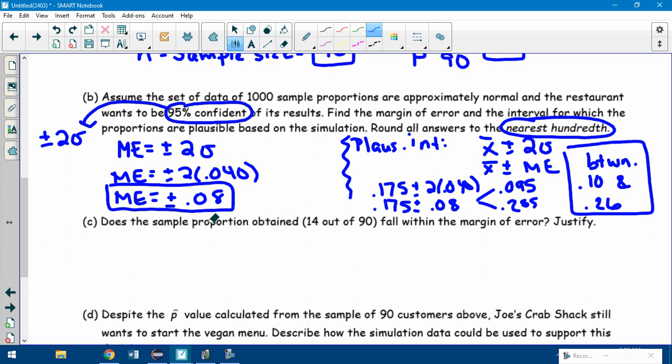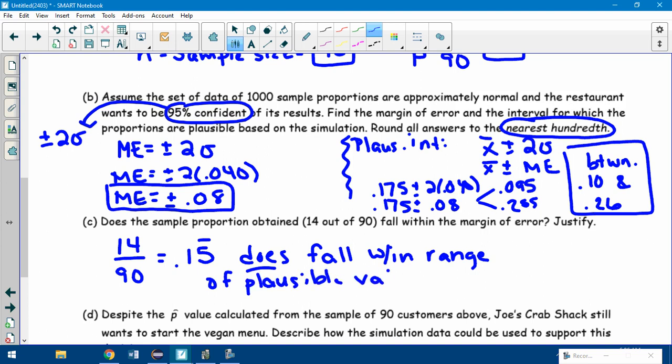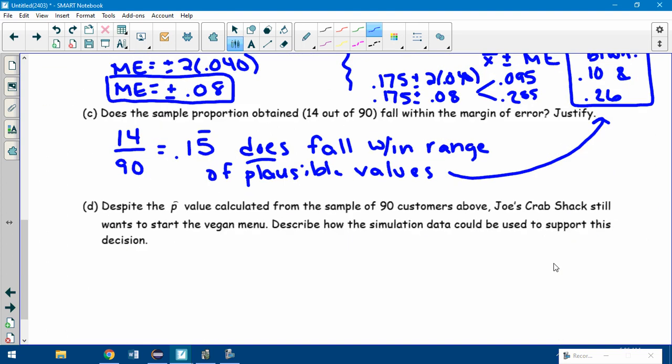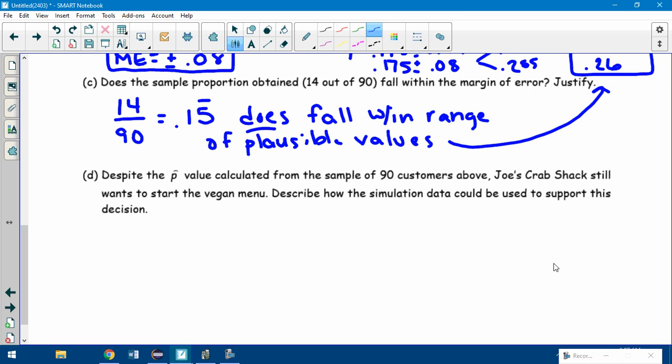Part C: Does the sample proportion obtained, 14 out of 90, fall within the margin of error? Justify. Well, we said 14 out of 90 came out to be 0.15 repeating, and 0.15 definitely falls in this range of plausible errors, which means it does fall within the margin of error. So it does fall within range of plausible values.